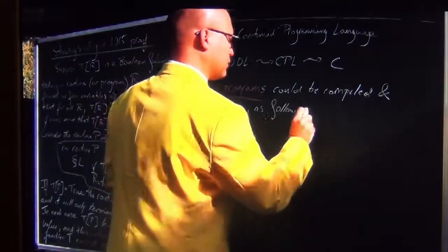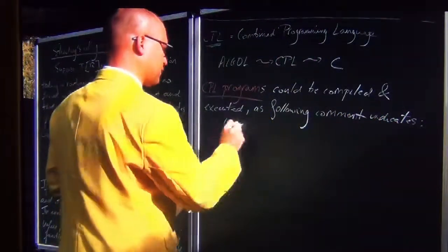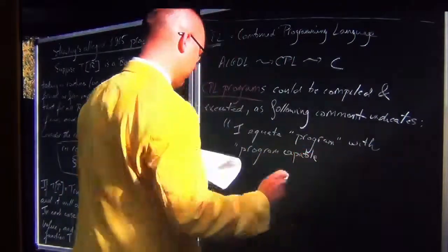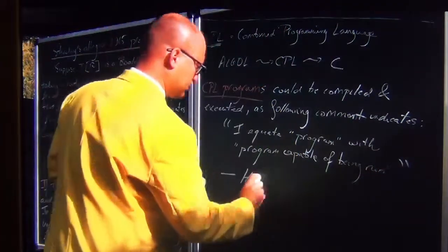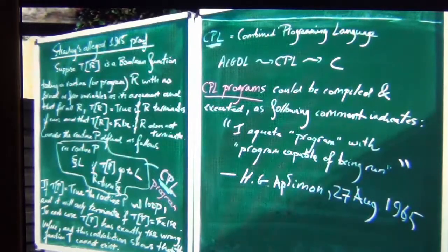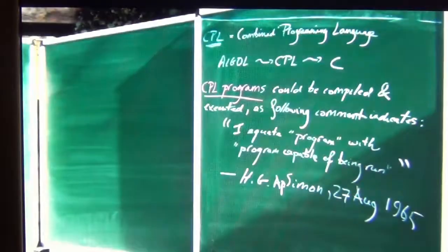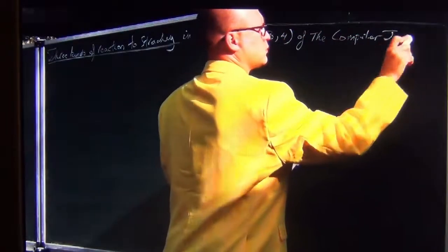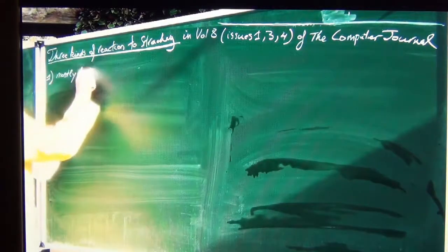CPL programs could be compiled and executed. I equate program with CPL program capable of being run — this comes from H.G. Epsimon in 1965, one of the people who replied to Strachey's letter. They were asking: what precisely is a program, what precisely is an impossible program? To summarize, there were three kinds of reactions to Strachey's 1965 letter, appearing in volume 8, issues 1, 3, and 4 of the Computer Journal.